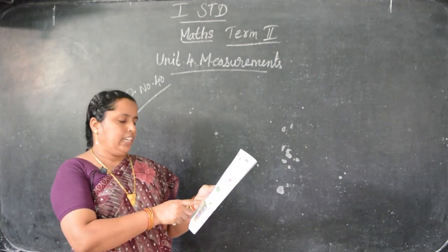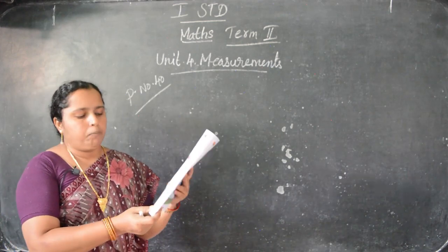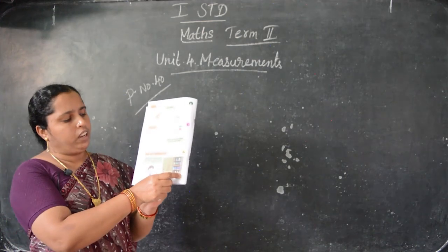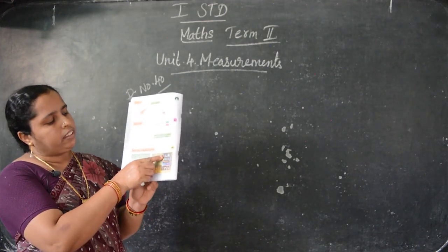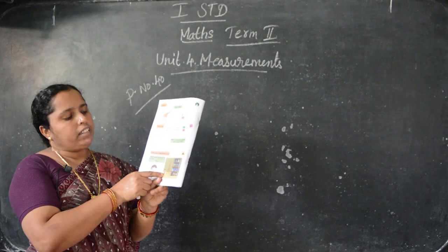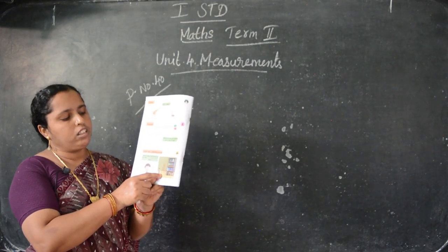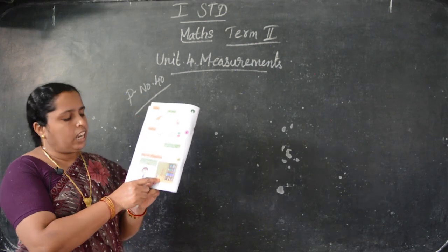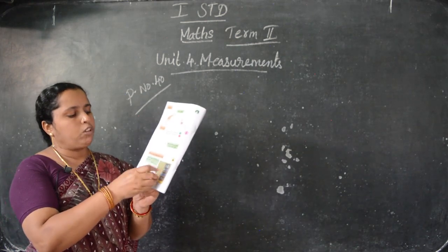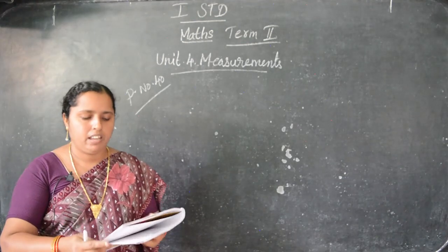Which ladder will he use to pick the red colored book? Here is one shelf. Here the red book is at the top. So this boy - which ladder will he use to collect the red book? The long ladder. So he has to use this long ladder to collect the red book. So you have to take this one - long ladder.